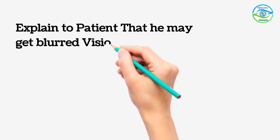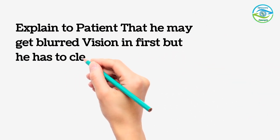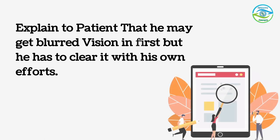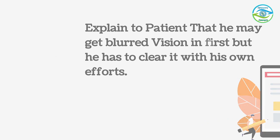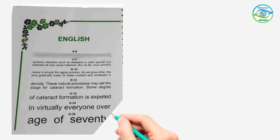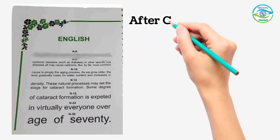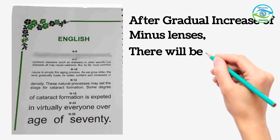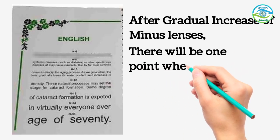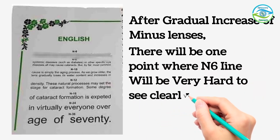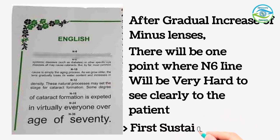We must inform the patient that they may see blur initially but they need to try to clear it. As we gradually increase the minus lenses, a point will come where they cannot clear the blur no matter how hard they try — that is our first sustained blur point.